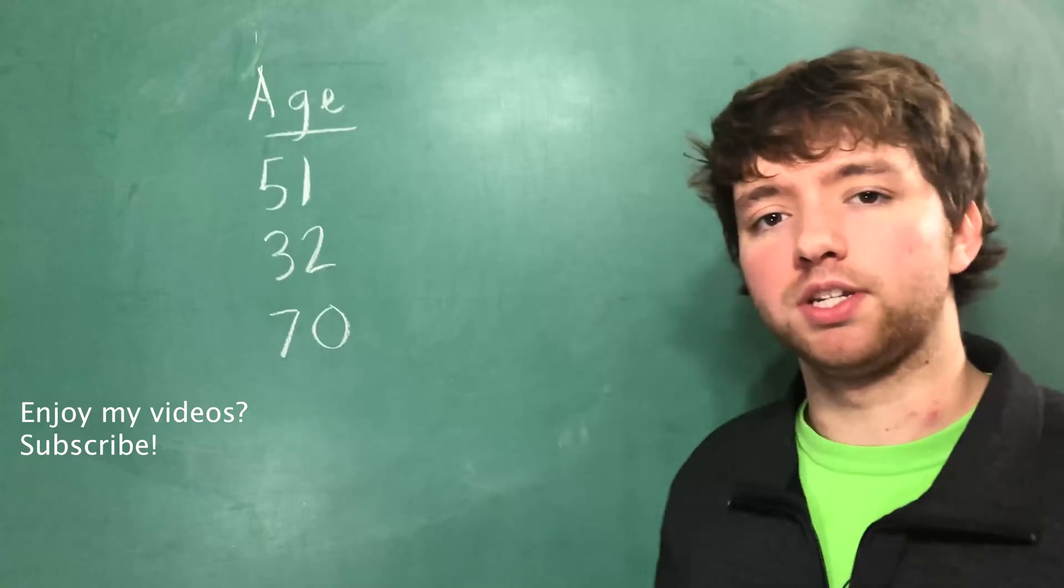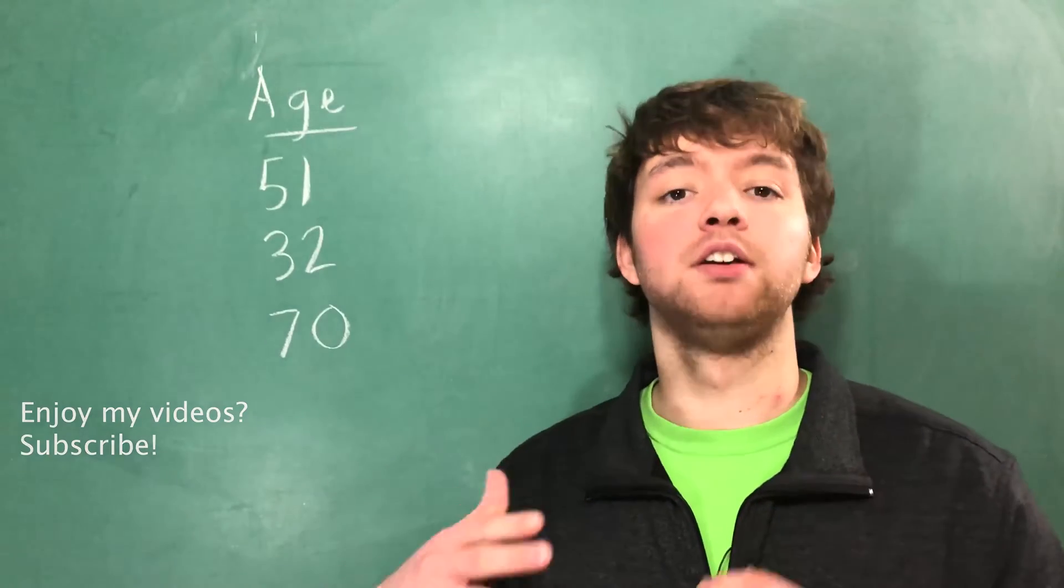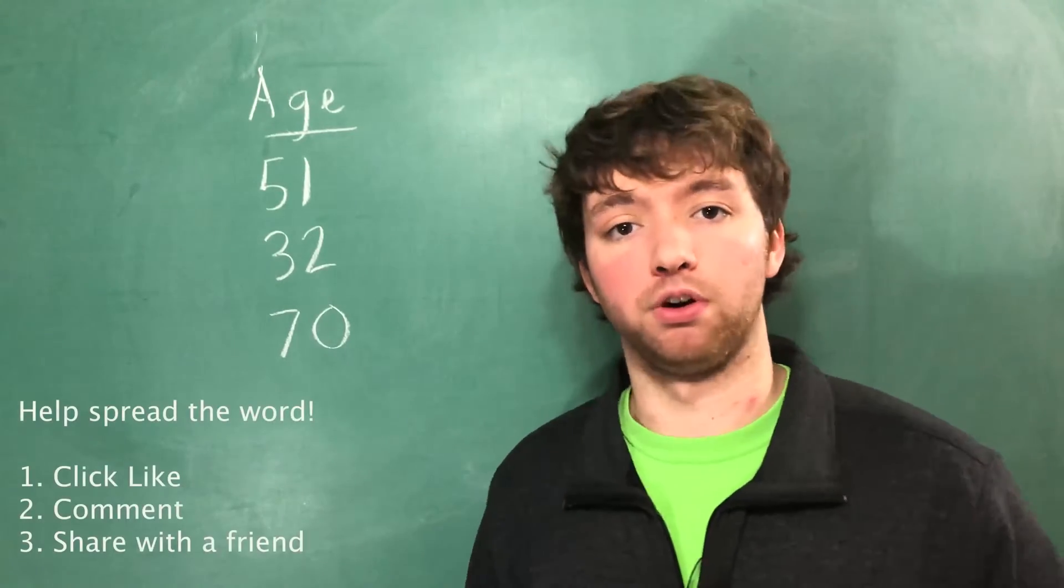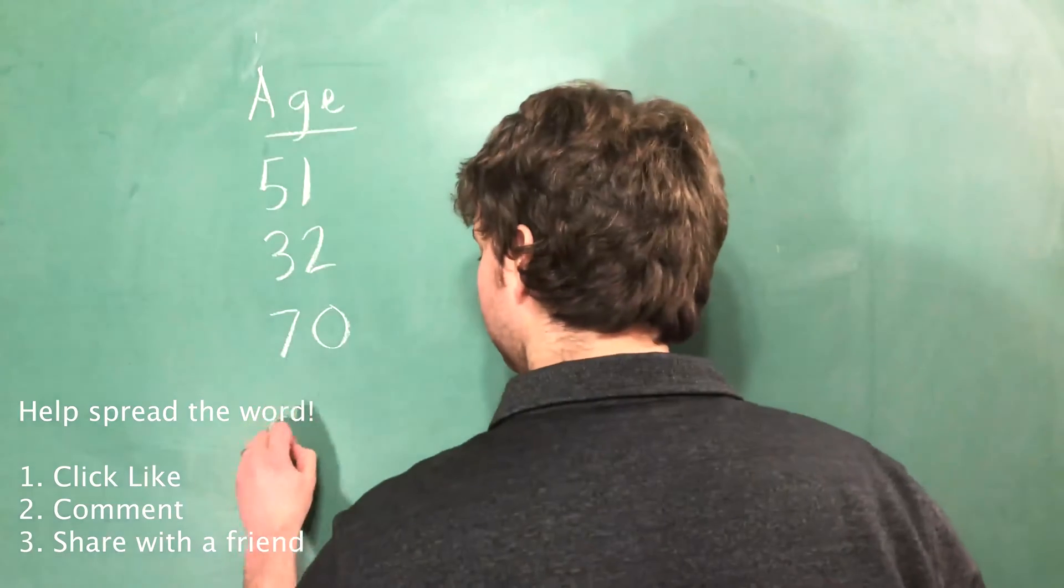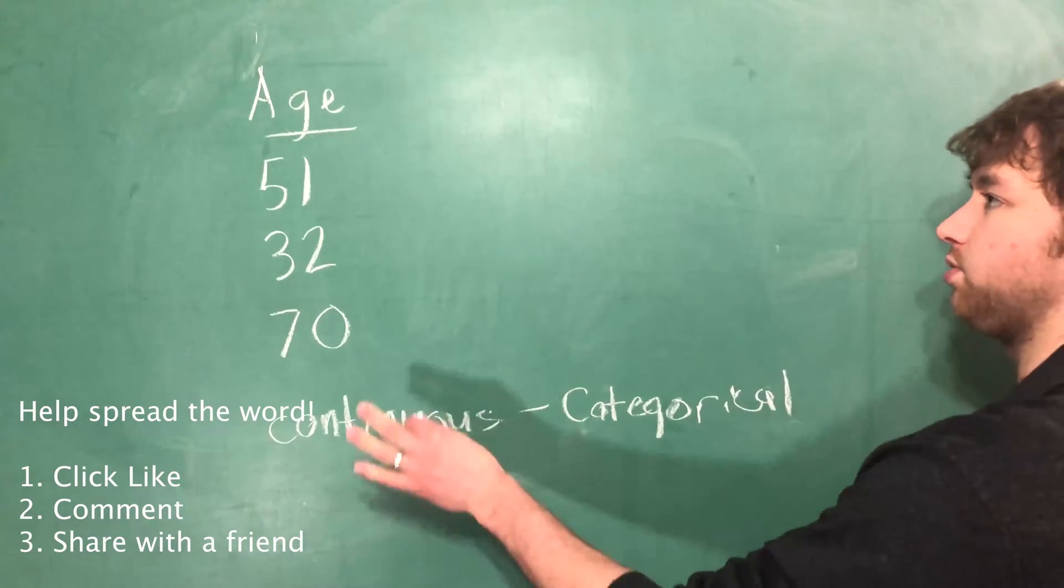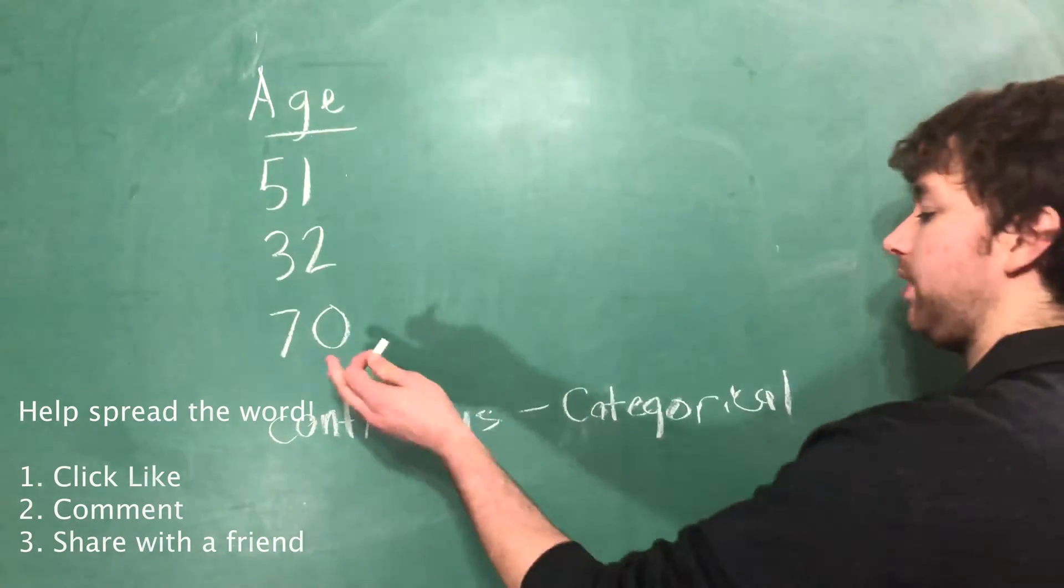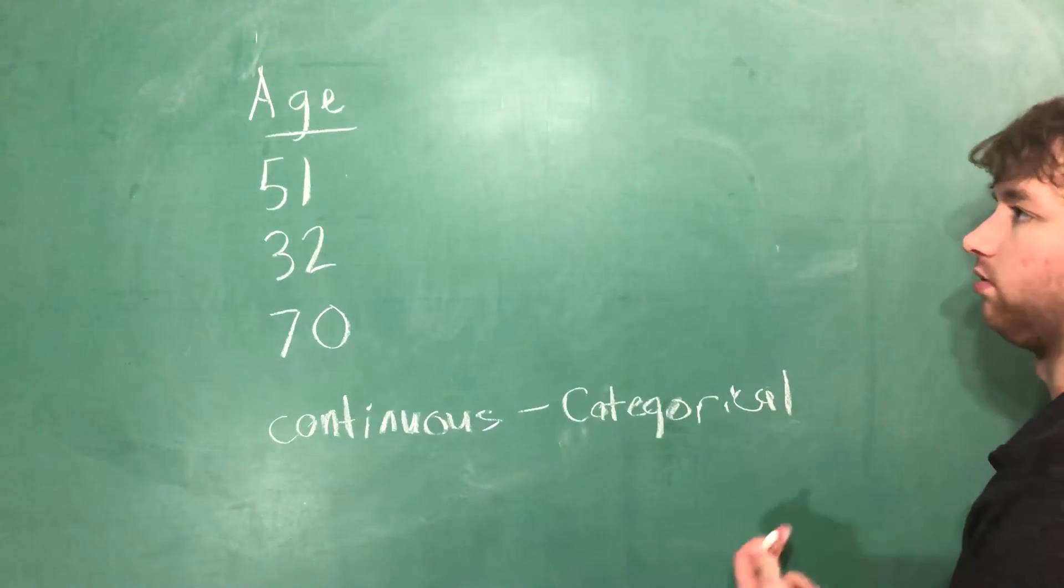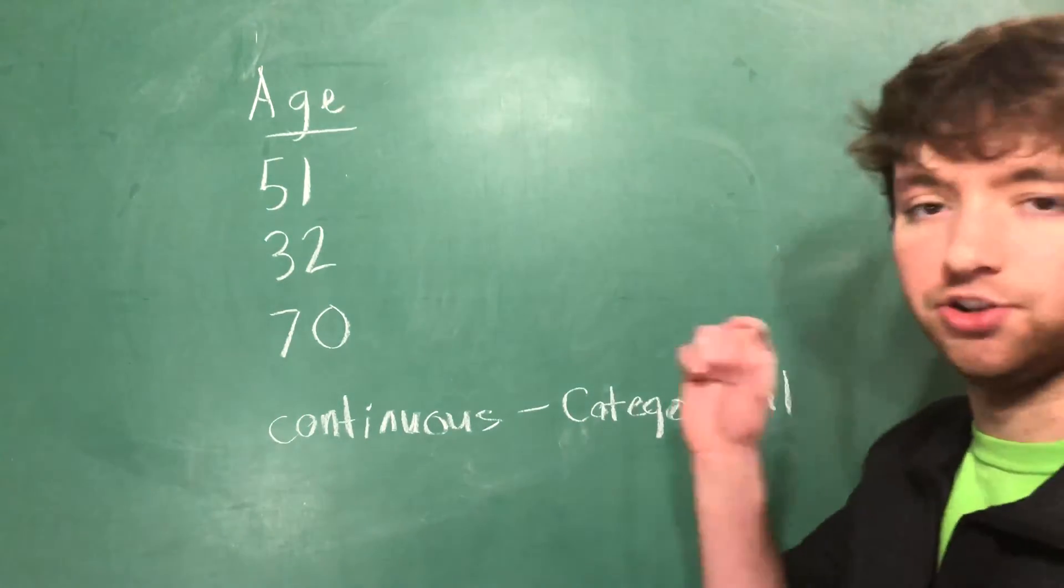This is a process where we take continuous data and convert it to categorical. So we start with a continuous feature such as age and we convert that into a categorical feature such as age range.